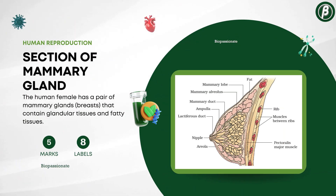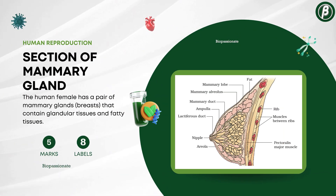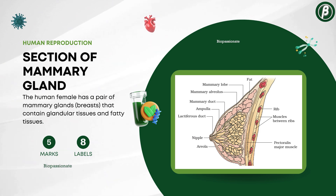Number 7: Section of mammary gland, for 5 marks with a minimum of 8 labels.